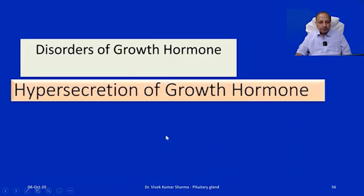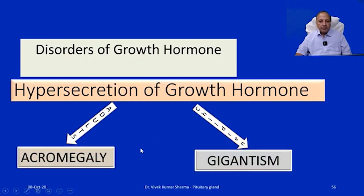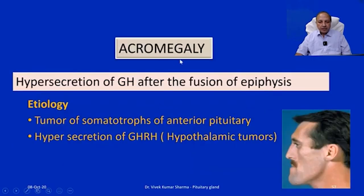Regarding disorders of growth hormone: hypersecretion of growth hormone in adults is called acromegaly, and in children before epiphyseal fusion it leads to gigantism. Acromegaly is hypersecretion of growth hormone after fusion of the epiphysis. When the epiphyseal fusion has occurred, the person cannot increase height further. If growth hormone secretion keeps increasing at that stage, it leads to acromegaly. Major causes include hypothalamic tumors causing increased GHRH release, or tumors of the somatotropes of the anterior pituitary itself.